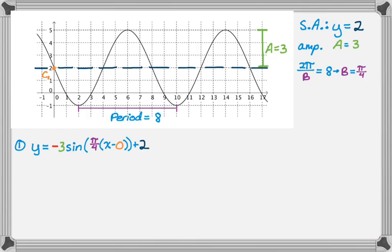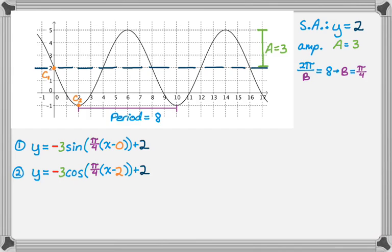For another equation, I'll move to the first minimum to the right of the starting point, where x equals 2, so c equals 2. The pattern there is minimum, intercept, maximum — that's a negative cosine graph. All that changes is the starting point and sine becomes cosine. Moving over another increment — which divides the period into four equal parts — I land at an intercept going to maximum, which is a positive sine graph.